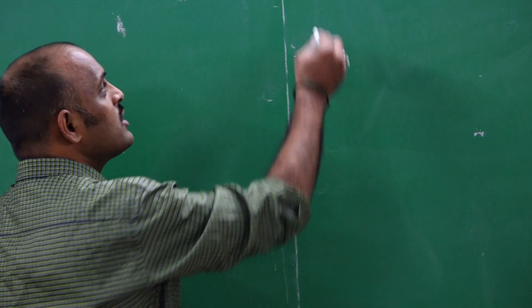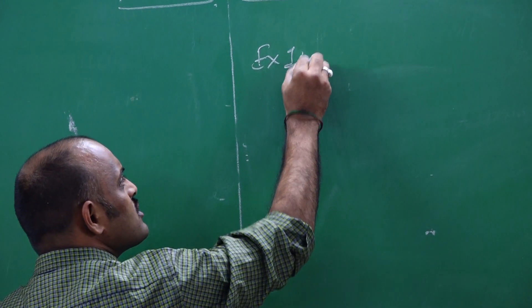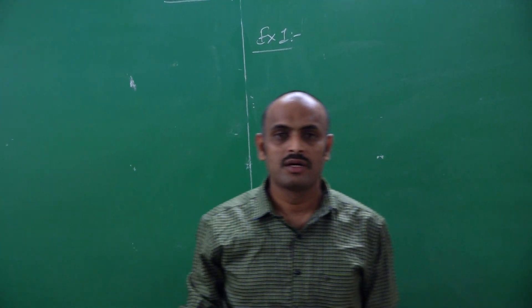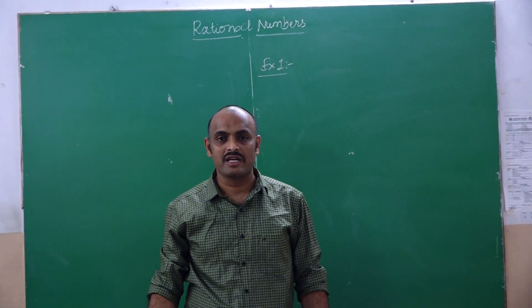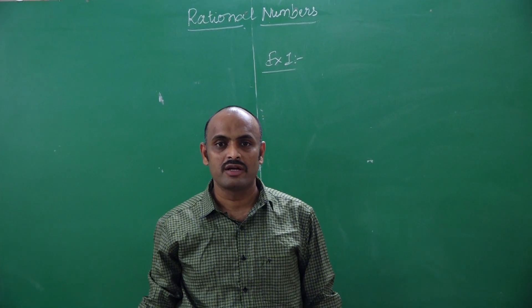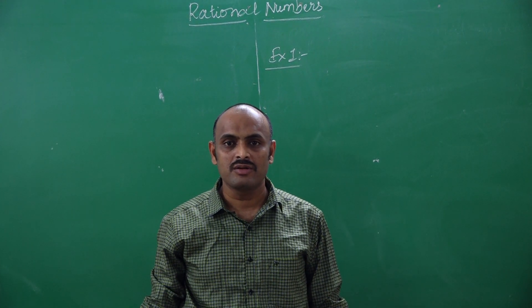Welcome to Narana online classes. Today we are going to discuss a topic called rational numbers. Let us discuss some questions on it. What is a rational number? Any number which can be expressed as a p by q form, where p and q are integers and q is not equal to 0.